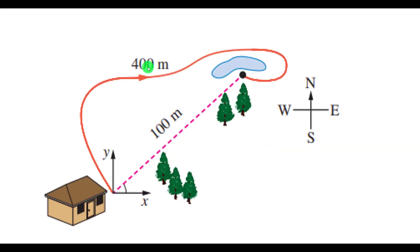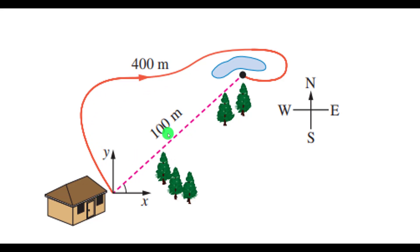Subha goes to the nearby playground from her home. Look at the picture and answer the following questions. What is the distance traveled by her? Yes, of course, it is 400 metres. What is the displacement? Yes, of course, it is 100 metres.